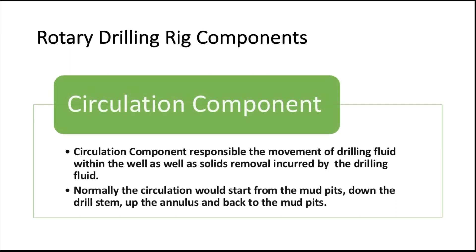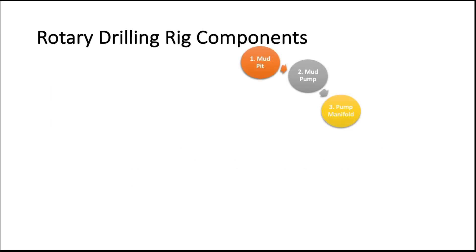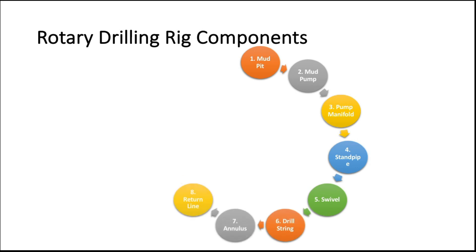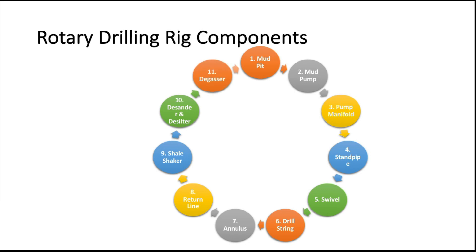Circulating system. The circulating system is used to circulate drilling fluid down through the drill string and up the annulus, carrying drilling cuttings from the face of the bit to the surface. The main components include: mud pits or mud tanks, mud pumps, pump manifold, standpipe, swivel, drill string, annulus, return line or flow line, and solid control equipment like shale shaker, desander, desilter, and degasser. Now let's watch a video to see the circulating system.